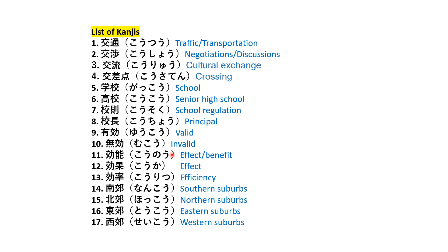All these kanjis have the sound 'ko' either at the front or at the end. For example, at the front: kotsu; and at the end: muko. All of the kanjis include the radical 'ko.'